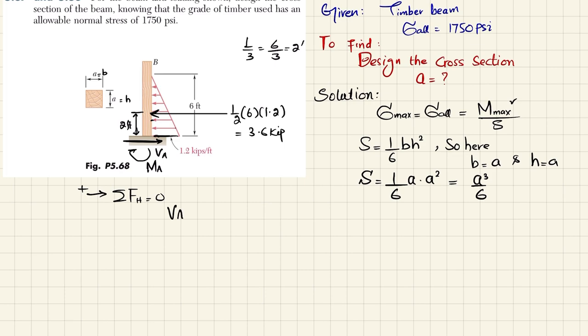So VA minus 3.6 kips is equal to 0, so it means that the shear force at point A is 3.6 kips. Now the maximum bending moment in cantilever beam lies at the fixed end. So moment about, sum of all moments about point A is equal to 0, and taking the counterclockwise moment as positive, so we have external